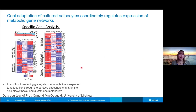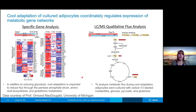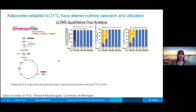We can also use the RNA-seq analysis to look more specifically at different genes. In addition to having a reduced glycolysis in these cells, it's also expected that cool adaptation would reduce the flux through the pentose phosphate shunt, as well as through amino acid biosynthesis and glutathione metabolism. In order to monitor these different pathways, we again do the LC-MS qualitative flux analysis and look at how carbon-13 labels are incorporated into specific metabolites. In this particular case, three different isotope labels were used: carbon-13 labeled glucose, carbon-13 labeled pyruvate, and carbon-13 labeled glutamine.